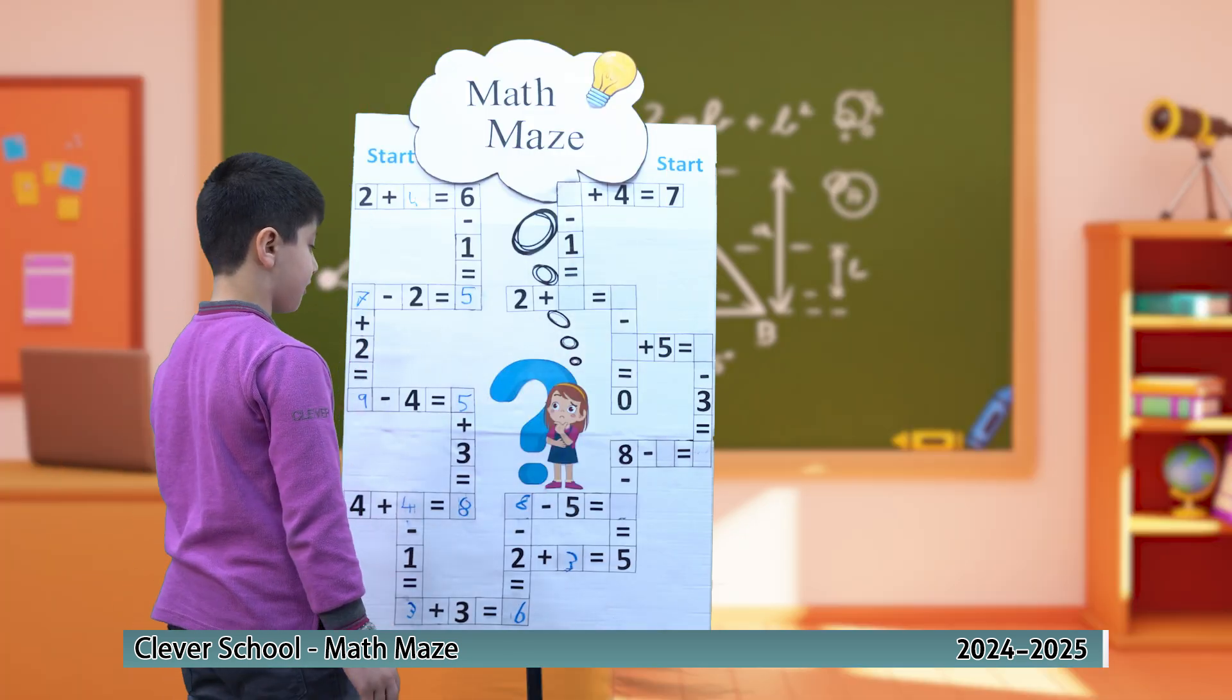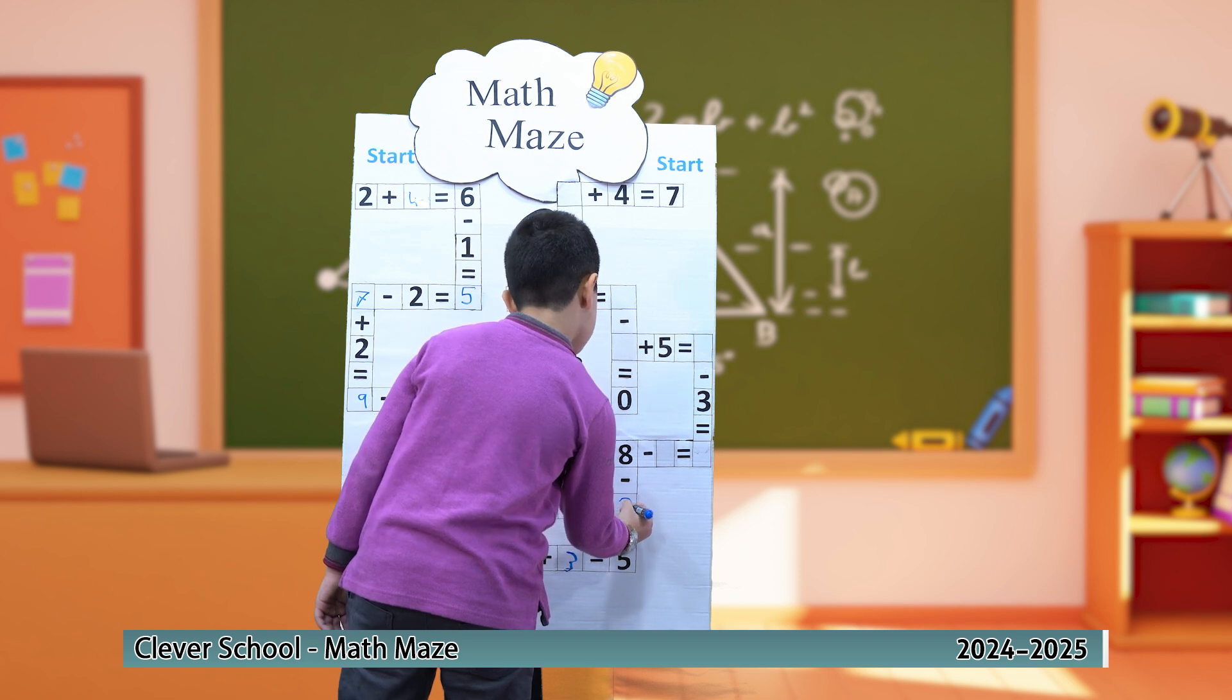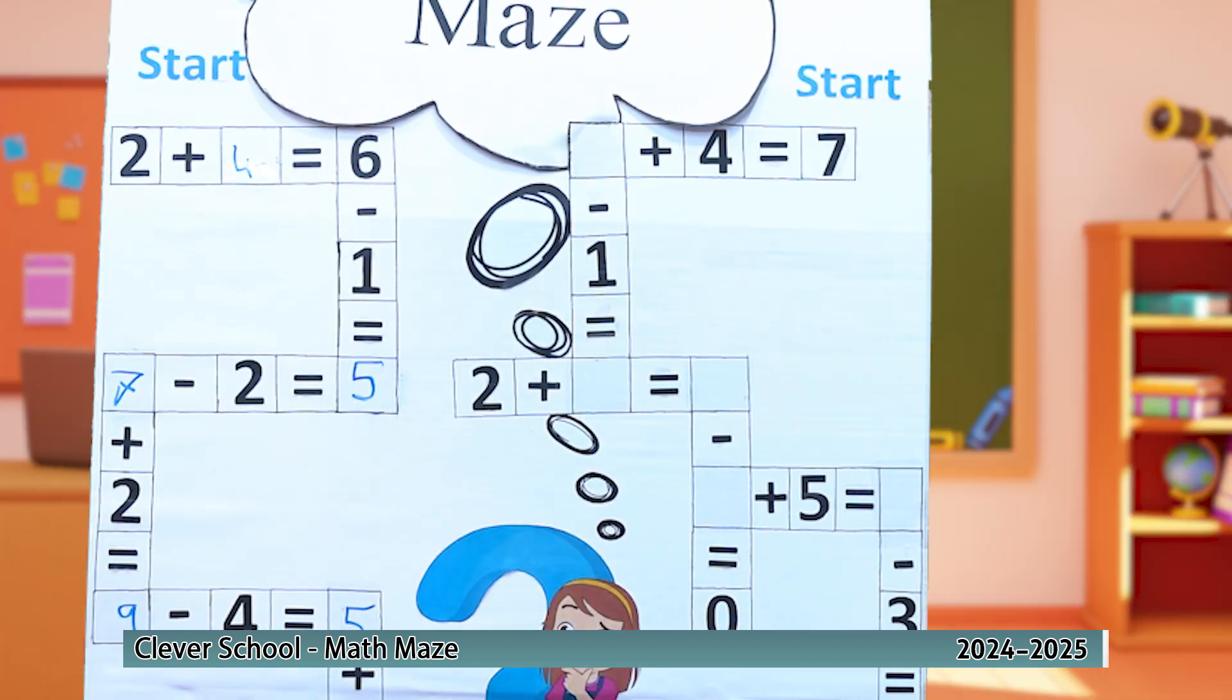8 minus 5 equals 3. At this point, we have two unknown values. So we have to begin at the second starting point.